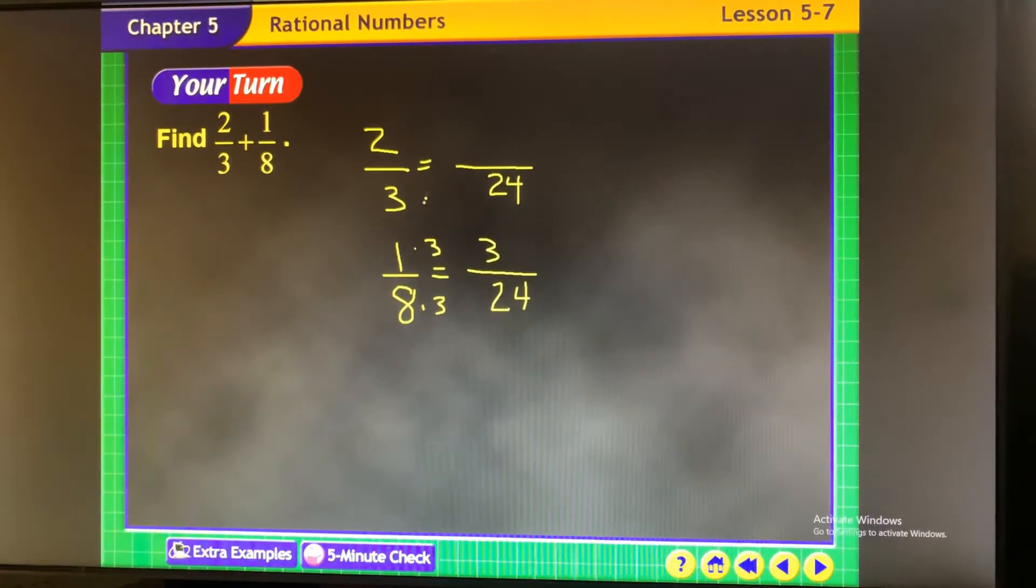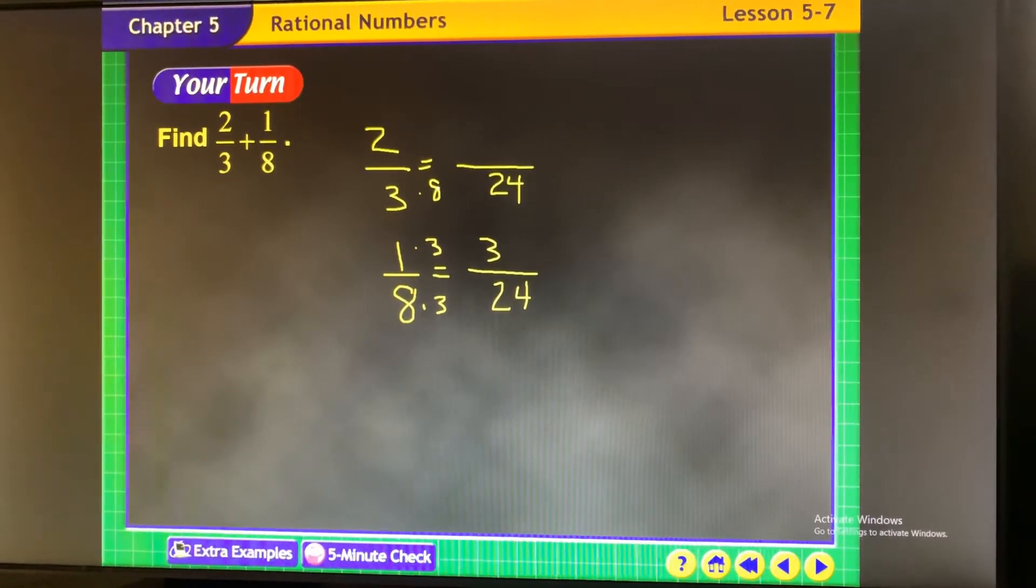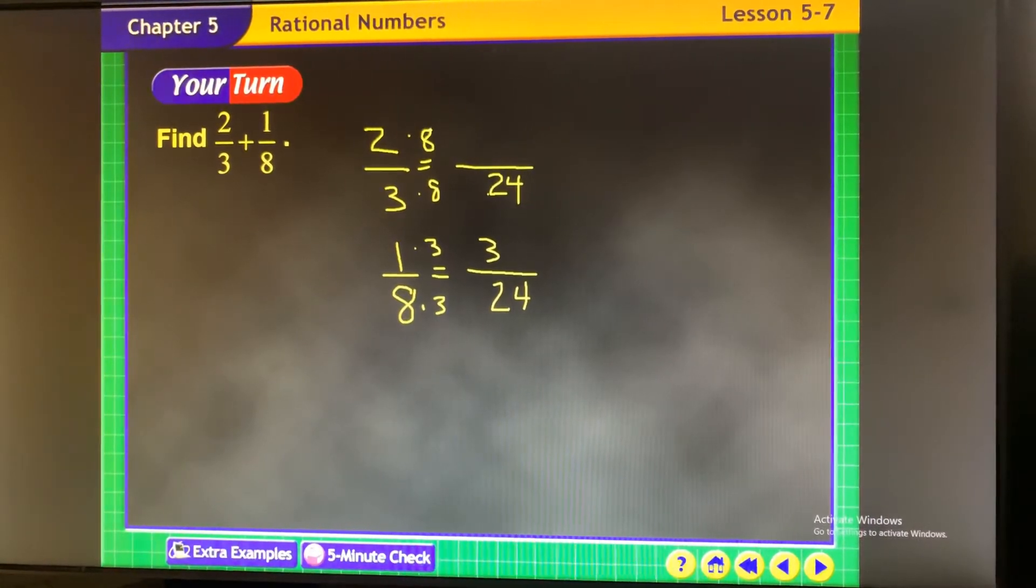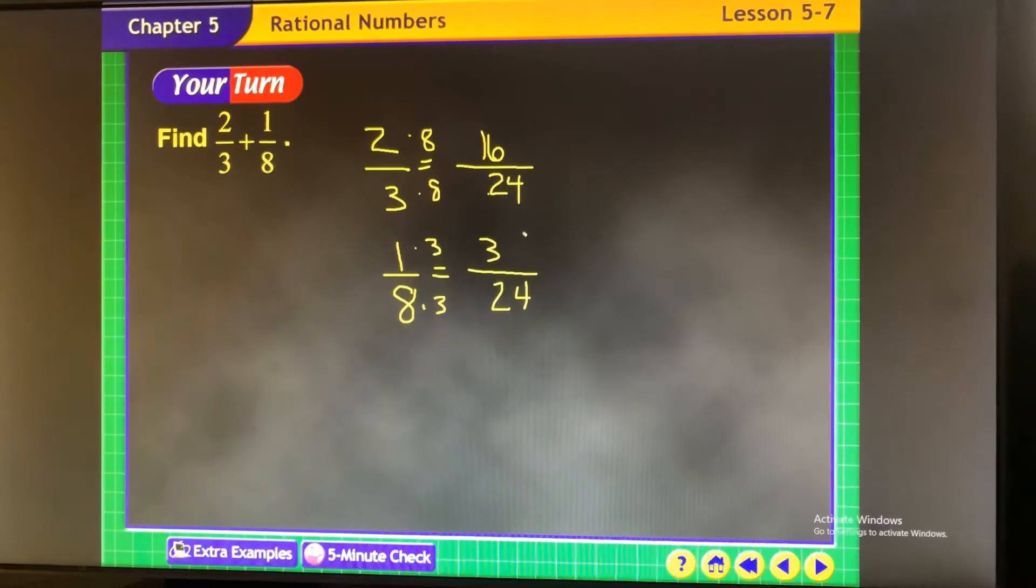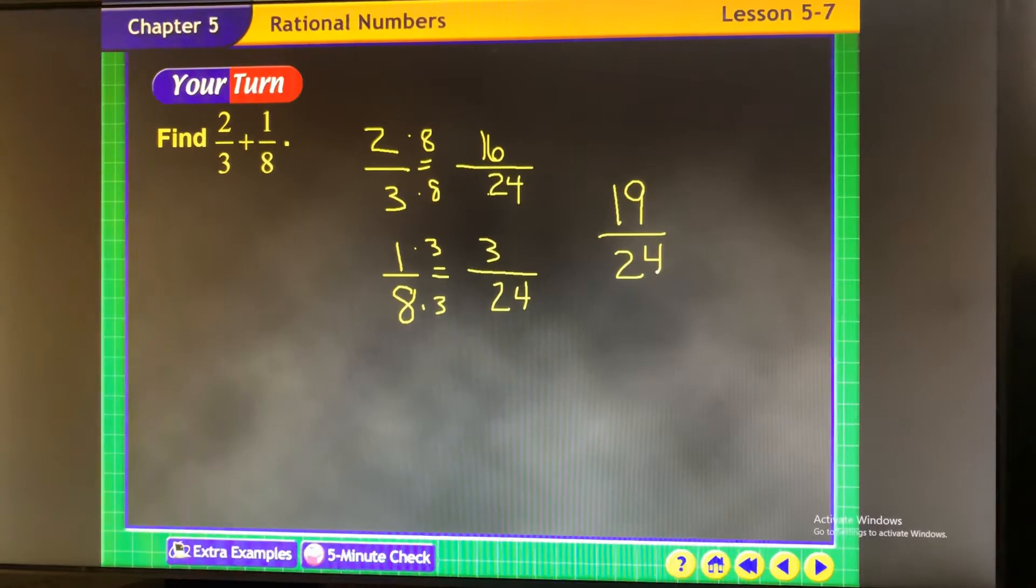See, notice it's got to be the same. 3 times 8 is 24, multiply the top by 8. And then do 16 plus 3 is 19 over 24. Done.